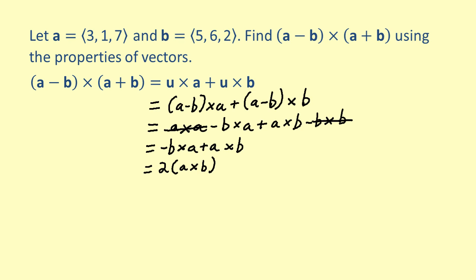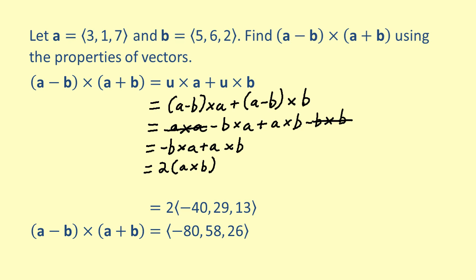Now that we've simplified the expression, we need to find a cross b. The cross product a cross b gives us a vector with an x component of negative 40, a y component of 29, and a z component of 13. All we need to do is multiply each component by 2. This gives us a vector with an x component of negative 80, a y component of 58, and a z component of 26. Therefore, a minus b cross a plus b gives us the vector negative 80, 58, 26.